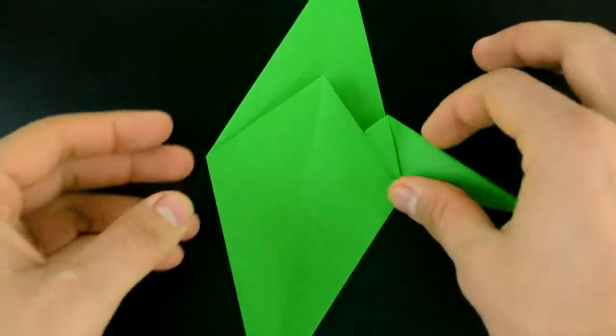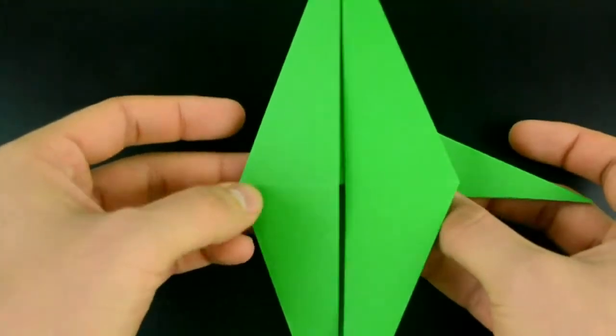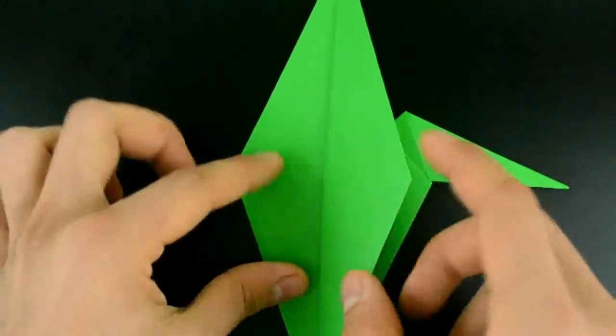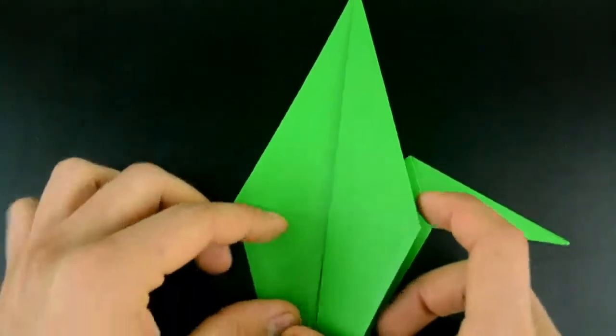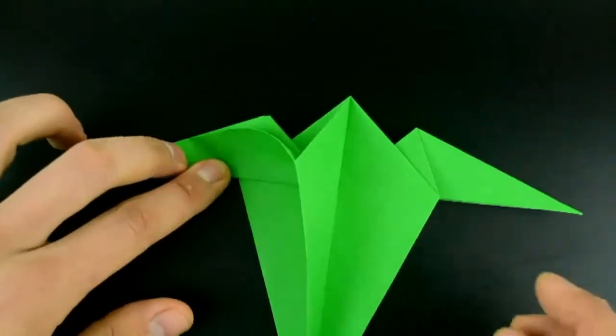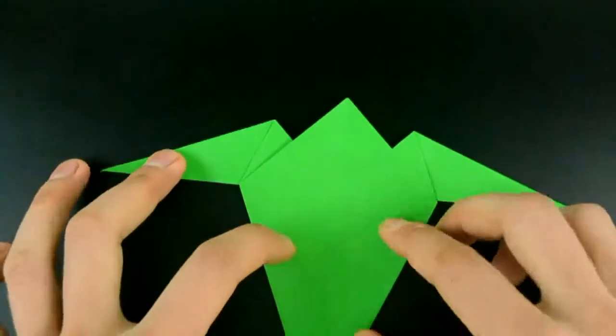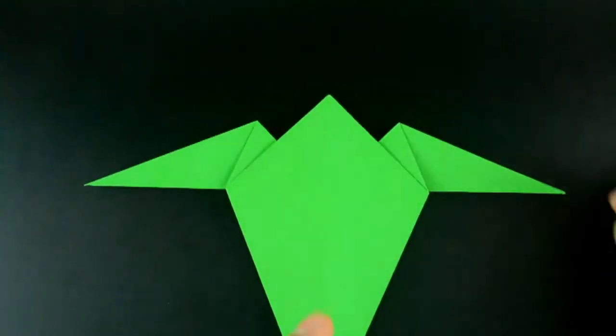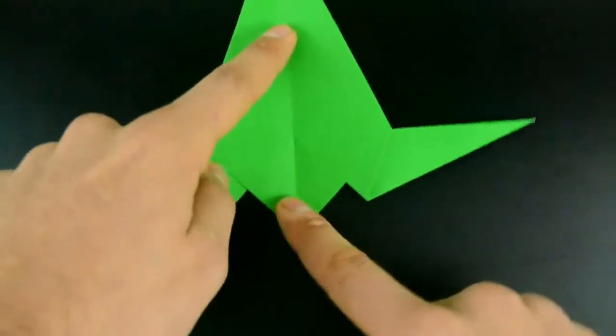Now let's do exactly the same on the other side. This line to the middle, then close and flatten the paper. Let's rotate in this position.